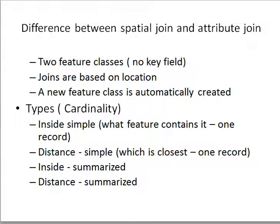Spatial joins also have cardinality — one-to-one or one-to-many. If you're doing simple joins, your cardinality is one-to-one or many-to-one. If you're doing summarized joins, then it's one-to-many or many-to-many. So that's the cardinality issue.